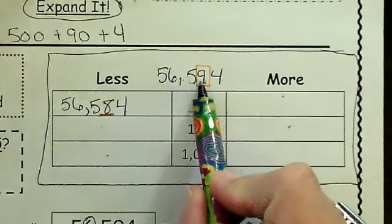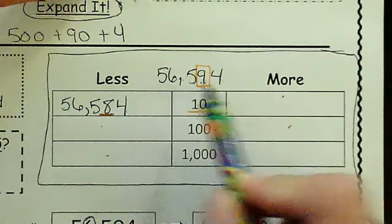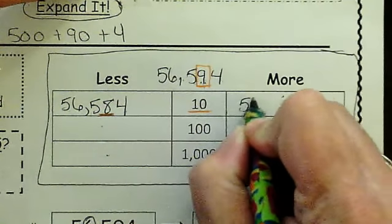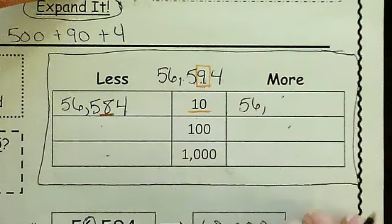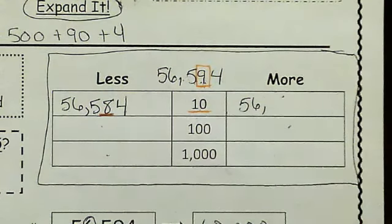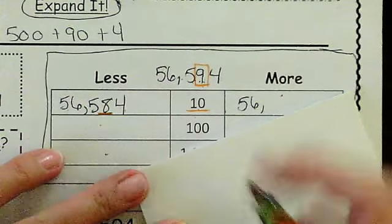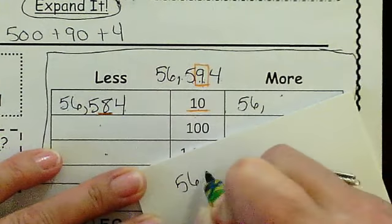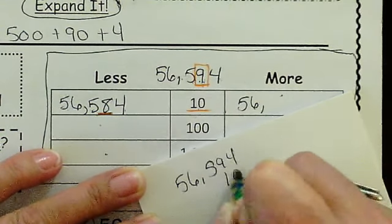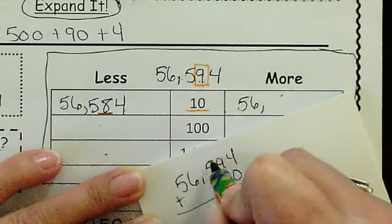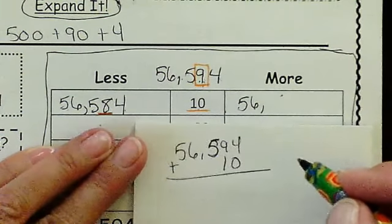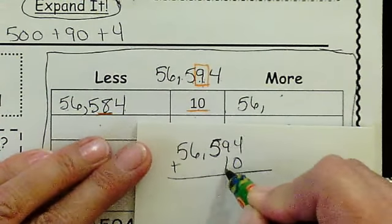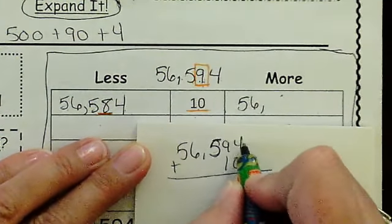Now I need to do 10 more than this. So 56,594 plus 10. If I am not sure, I can grab a piece of scratch paper and say, okay, I need to add 10 more. Make sure you get your place values in order so that you are on the right place value, like your 9 and your 1 line up for this one, and you can add it together.